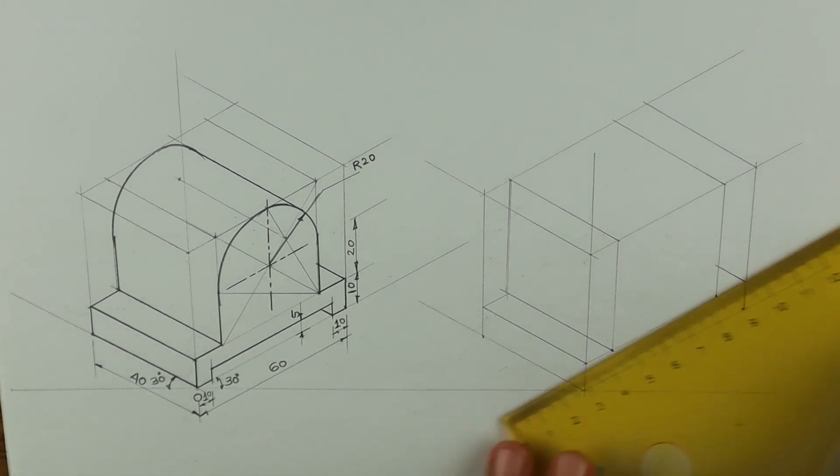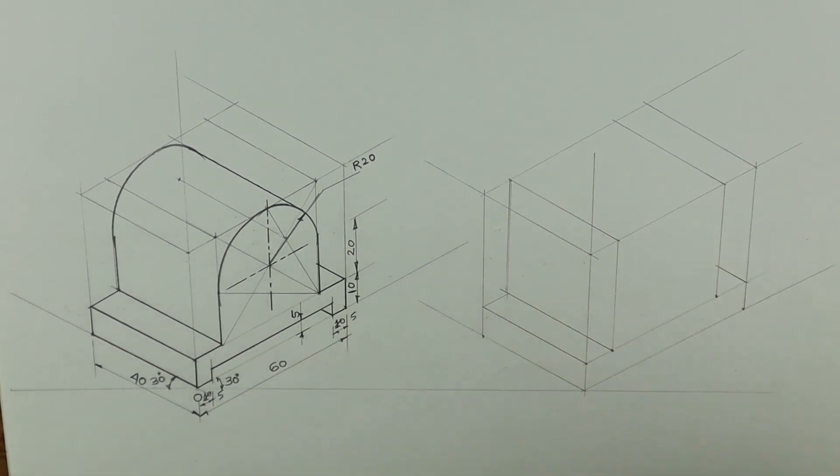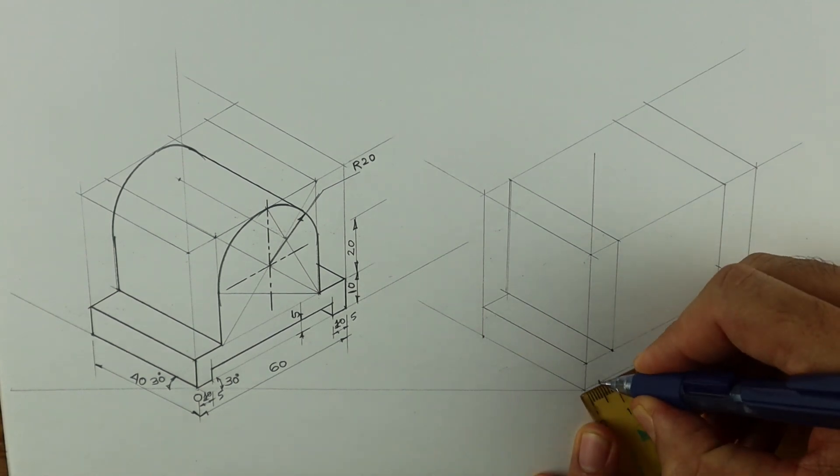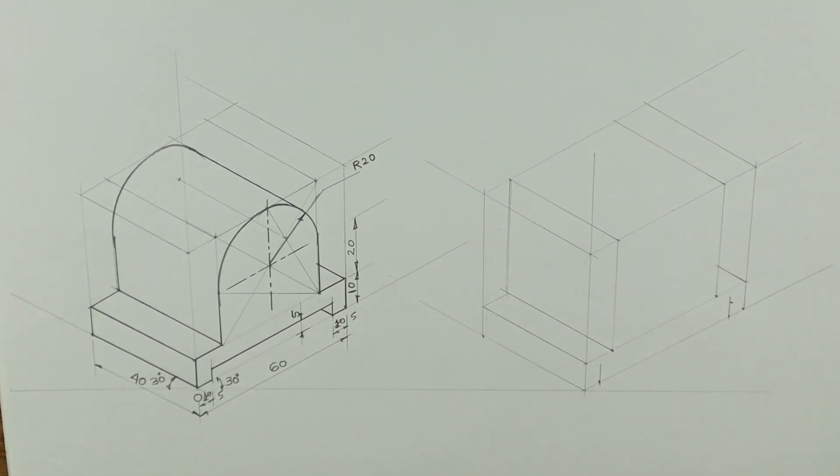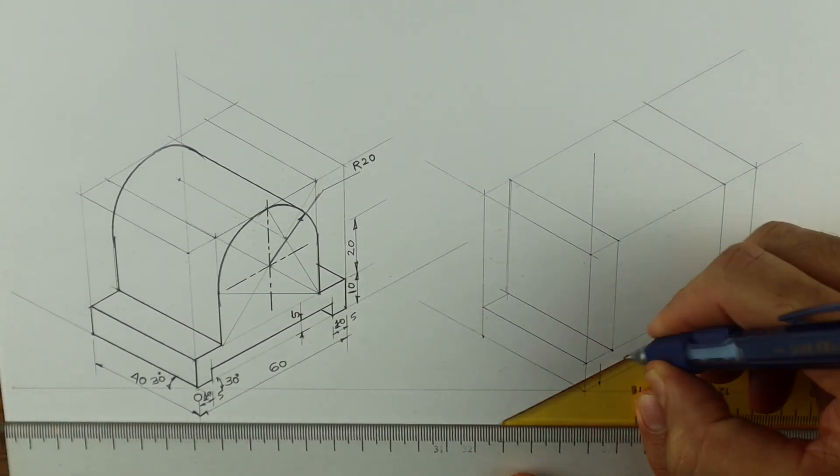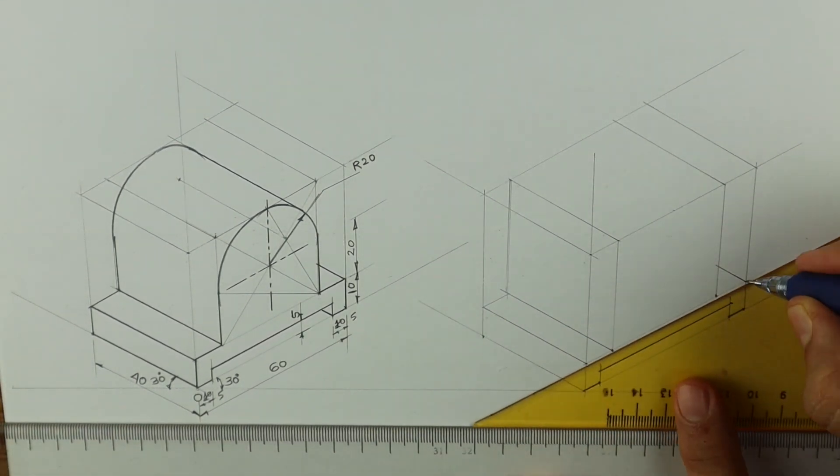Now we need to draw this. How much is this? 5. So take 5, 5 on both sides. Go up by 5 and complete this.